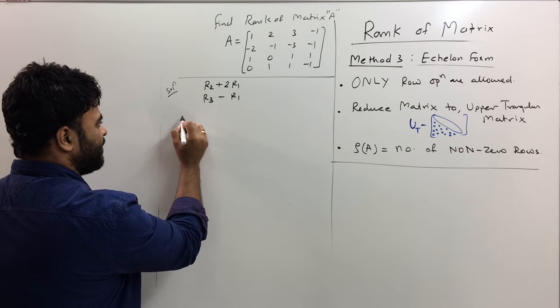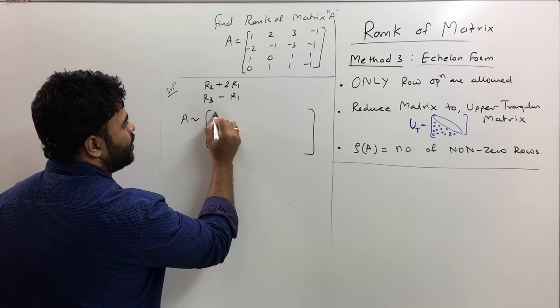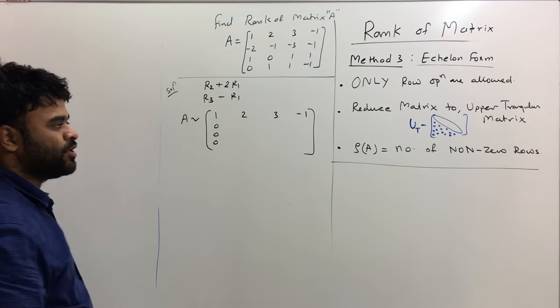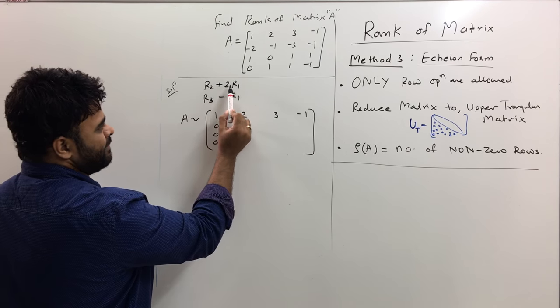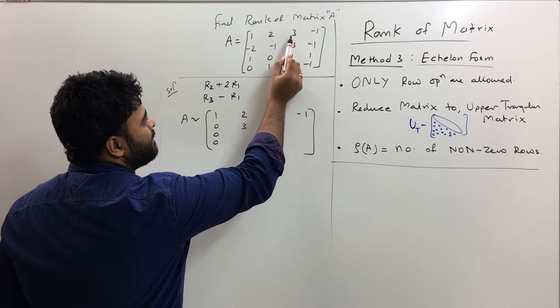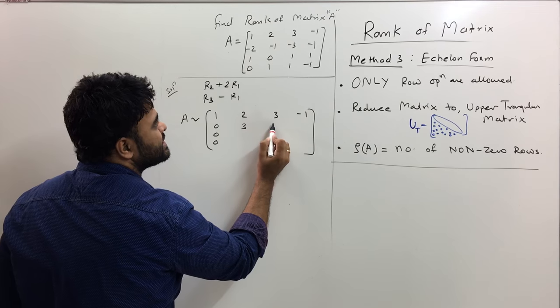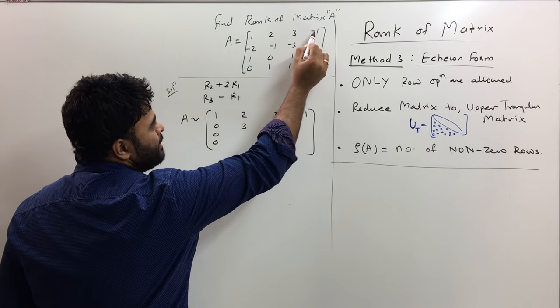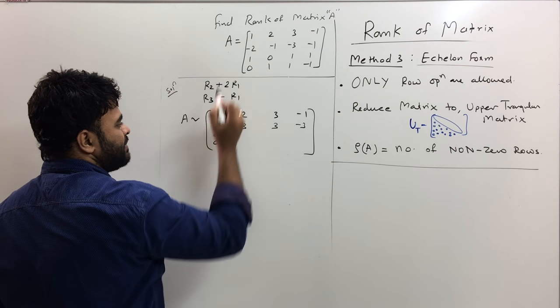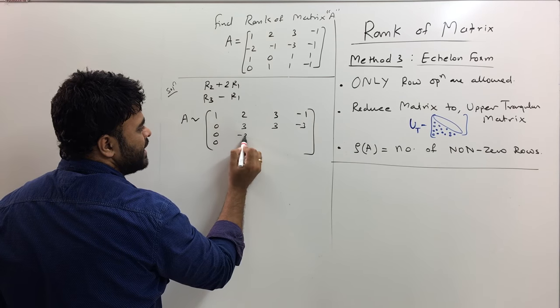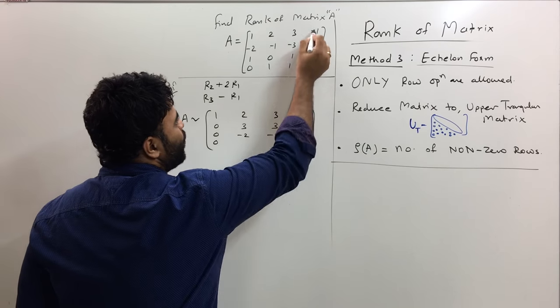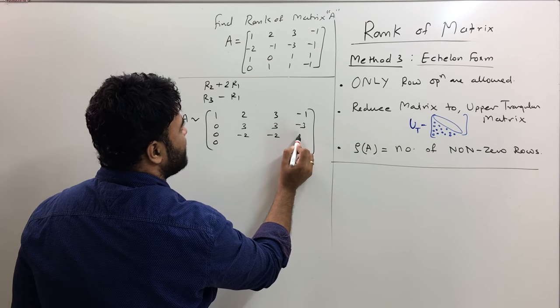This will become zero, and let's do R3 minus R1. Now A gets simplified to 1, 2, 3, minus 1. These all will become zero for sure. If I multiply R1 by 2 this becomes 4 and add it here, this is 3. Multiply by 2 this makes 6, and minus 3 is 3. Multiply by 2 is minus 2, and minus 1 is minus 3. Then R3 minus R1: 1 minus 1 is 0, 0 minus 2 is minus 2, 1 minus 3 is minus 2, and 1 minus minus 1 becomes 2.